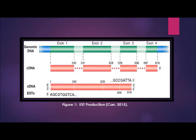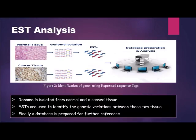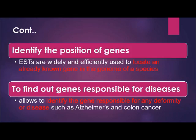This diagram shows the overall EST generation process starting from genomic DNA through to EST formation. As an example of gene identification analysis using EST: first, the genome was isolated from two types of tissue — normal and infected tissue. The EST were then used to identify the genetic variation between those two tissues. Finally, a database was prepared for further reference using the BLAST program.